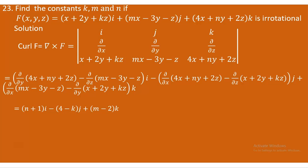So the curl of F equals (N + 1)i - (4 - K)j + (M - 2)k. Since F must be irrotational, we equate this to the zero vector. This gives three equations: N + 1 = 0, 4 - K = 0, and M - 2 = 0. Solving these, we get N = -1, K = 4, and M = 2.